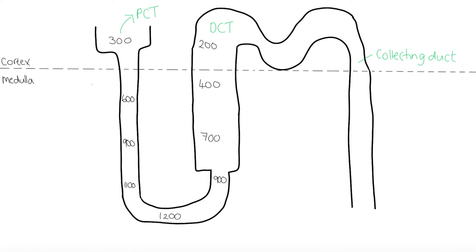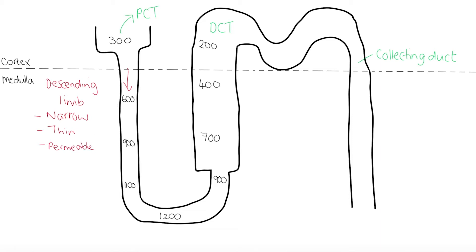There are two important parts of the loop of Henle. This side is the descending limb, and the filtrate moves down it. The important things to know about the descending limb are that it is narrow, it has thin walls, and most importantly it is permeable to water — so water is able to pass through the walls of the descending limb.